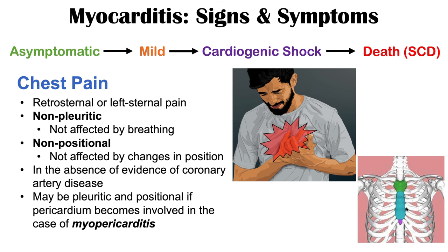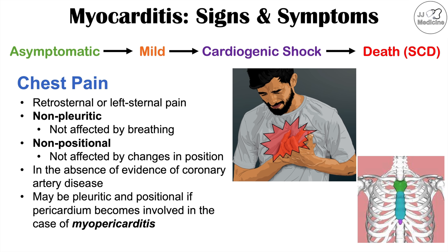It's also important to note that chest pain may be pleuritic and positional if the pericardium — the sac that surrounds the heart — becomes involved, which would be a case of myopericarditis, a mixture of inflammation of both the myocardium and the pericardium. If the pericardium is inflamed, the patient will experience pleuritic chest pain affected by breathing, and positional pain that worsens when lying down flat and improves with sitting up or leaning forward.